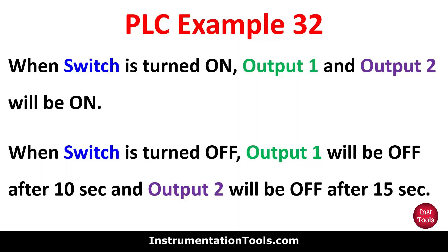Example 32: when switch is turned on, output 1 and output 2 will be on. Then when switch is turned off, output 1 will be off after 10 seconds and output 2 will be off after 15 seconds. We will use a normally open contact for the switch and a T-OFF timer so that when the switch is turned off, the outputs turn off after some time.